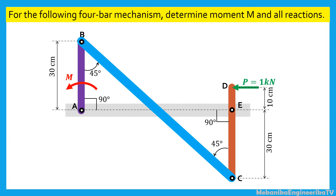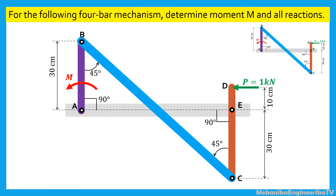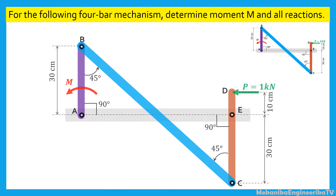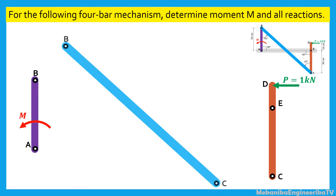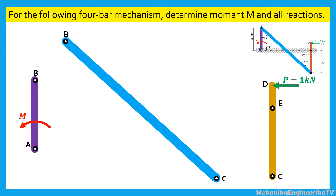Let's first start by drawing the free body diagram of the three links AB, BC, and CED. To this goal, we first need to keep a miniature of the mechanism to recall connections between bars, and then we need to split the bars apart. The bar BC does not receive any external force or moment except for the two reactions in B and C. Thus, the bar BC can be considered as a two-force member.